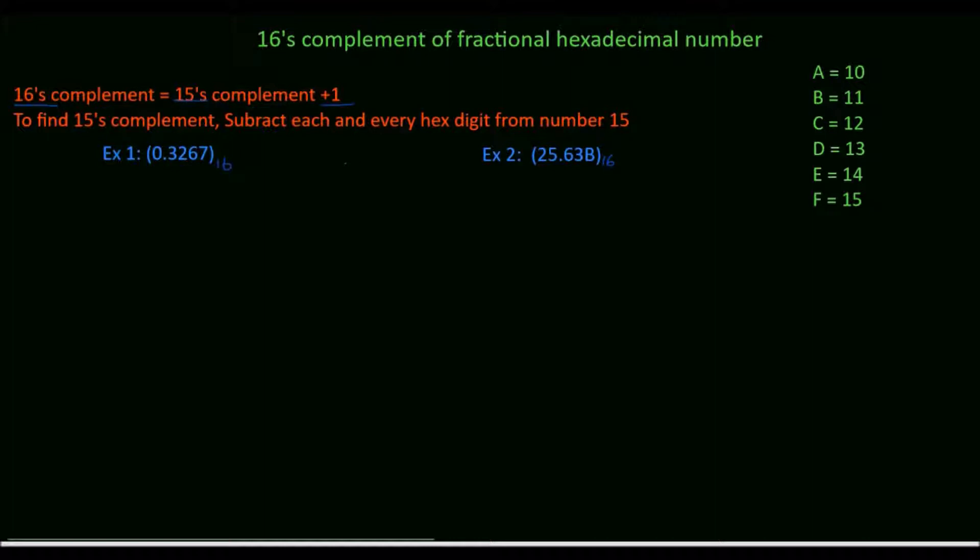First, we will solve example 1. The given hexadecimal number is 0.3267. First, we have to find 15's complement, so subtract the digits from 15.